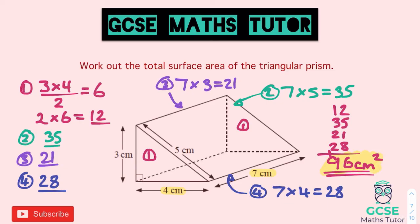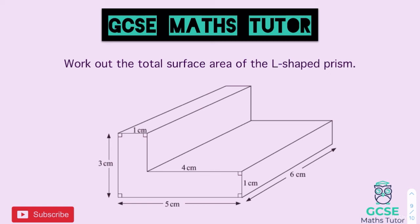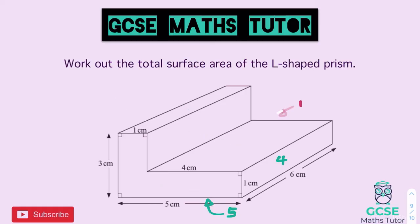That covers cuboids and triangular prisms. Now for the challenge question: work out the total surface area of the L-shaped prism. This is particularly difficult because we have a compound shape for the front face, plus lots of rectangles around the shape — rectangles on the top, sides, bottom, and back, plus the L-shaped face on the front and back. Pause the video, draw the shape, and have a go.